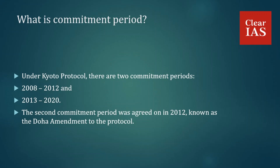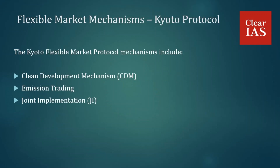There is a flexible market mechanism under this protocol. Countries bound to Kyoto targets must meet them largely through domestic action — reducing emissions onshore — but they can meet part of their targets through three market-based mechanisms: the Clean Development Mechanism (CDM), Emission Trading, and Joint Implementation.